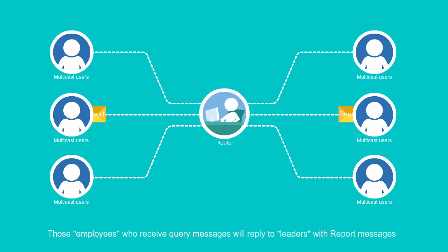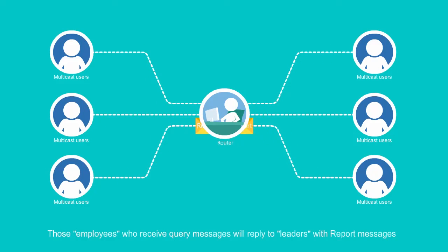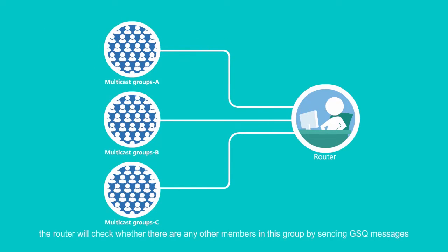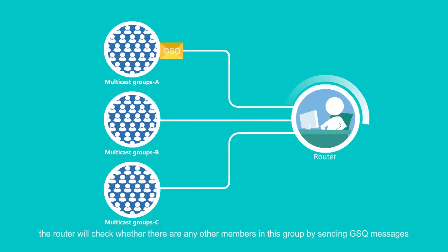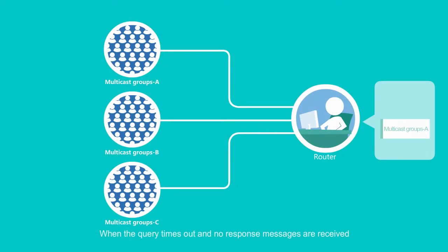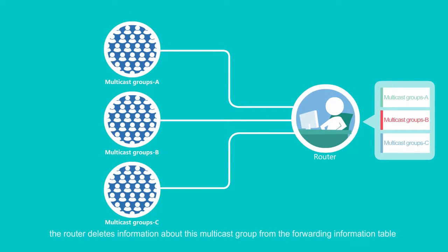Employees who receive query messages will reply to leaders with report messages. After receiving leave messages from multicast group members, the router will check whether there are any other members in this group by sending GSQ messages. When the query times out and no response messages are received, the router deletes information about this multicast group from the forwarding information table.